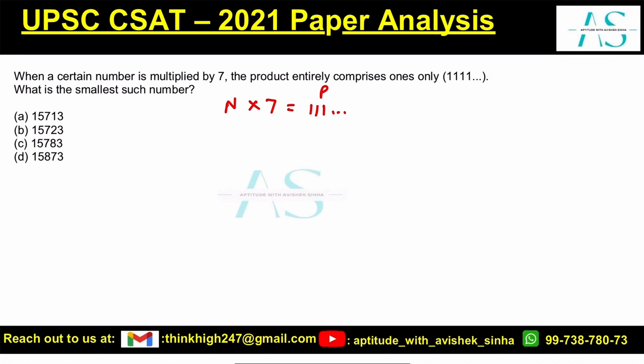That is what it says. Out of these 4 options, which is the smallest such number? So let's quickly see which number to multiply with 7 gives 111... If we have any other digit other than 1 in the product, I can simply eliminate that particular value. Let's start.